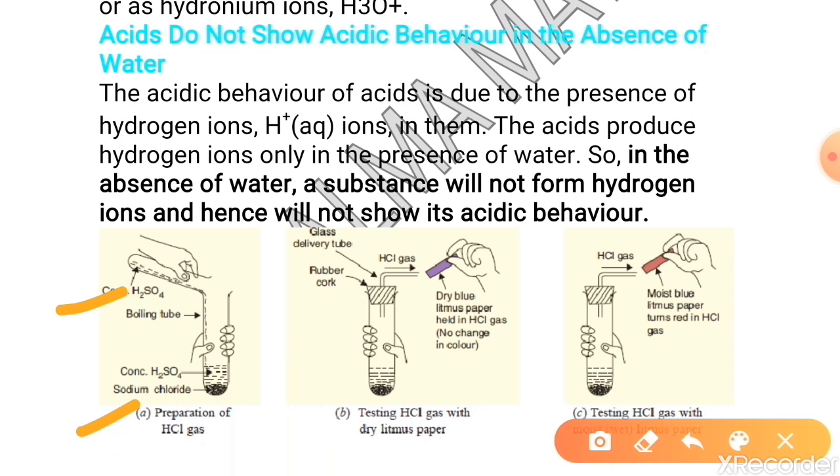And if we will pass this HCl gas, which is dry, through a dry litmus paper, which is blue in color, there will be no change of color, as there will be no H+ ion which will release to change the color of your litmus paper.